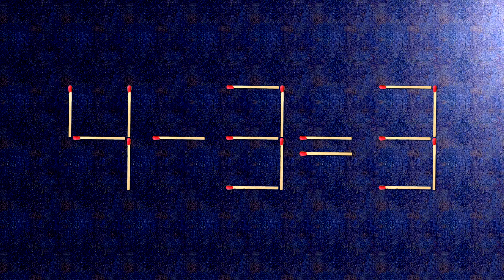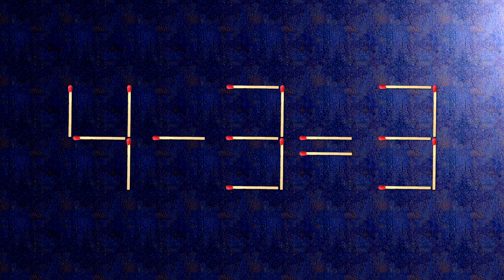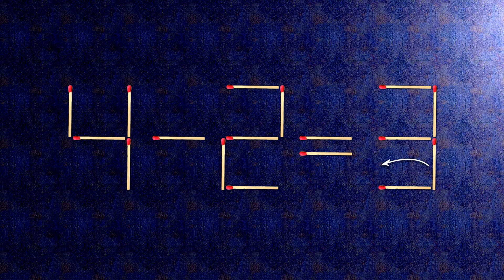Here is how this puzzle is solved. All we need to do is move this match right here, and this match right here. Now when we check the condition, 4 minus 2 is 2. The task is done and the puzzle is solved.